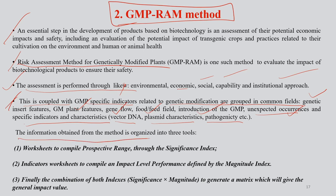The information obtained from this method is organized into three tools. First, a worksheet to compile the prospective range through significance indexes. Second, indicator worksheets to compile an impact level performance defined by the magnitude index — how much impact is actually occurring. Finally, the combination of both indices — significance and magnitude — to generate a matrix which will give us the general impact value.